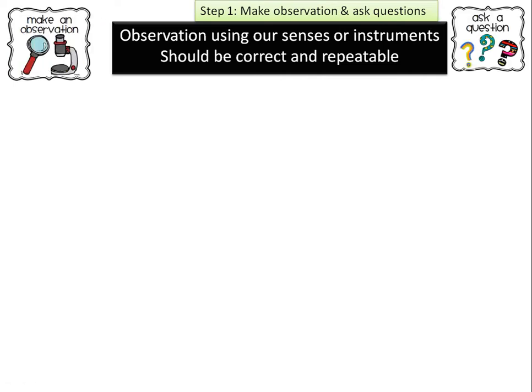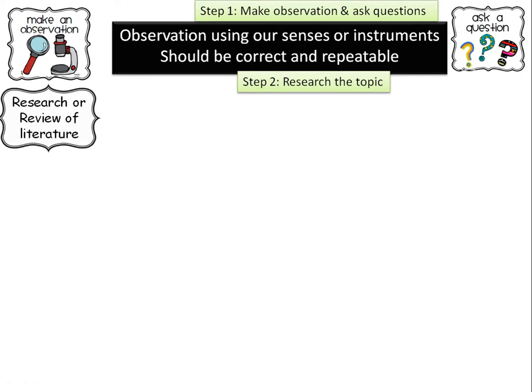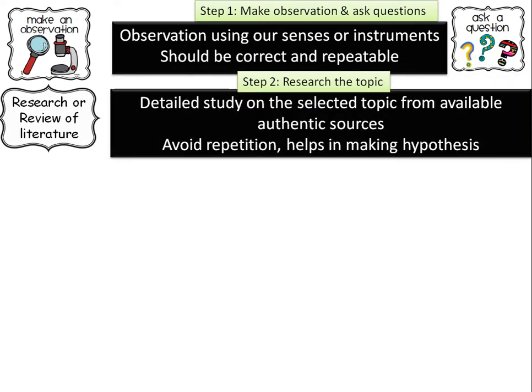Then we will be asking questions about the observation — how, what, why, what's the reason — and these questions will help us to define the problem. Therefore step two is research the topic, also called review of literature. It is a detailed study of the selected topic from all available authentic resources.